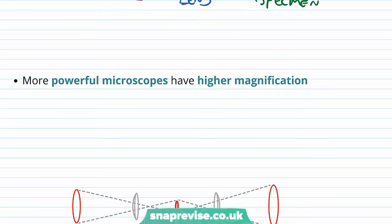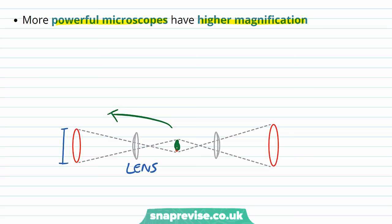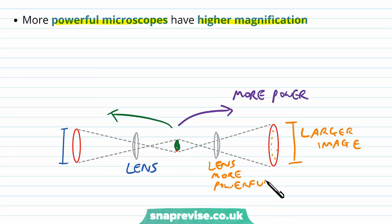And the more powerful the microscope is, the greater its magnification. If we pass the specimen through this lens, we end up with a particular image size. If we use a slightly more powerful microscope and pass the specimen through a lens again, we end up with an image which is greater. With a larger image, we can see more detail, the lens is more powerful, and the magnification is greater.